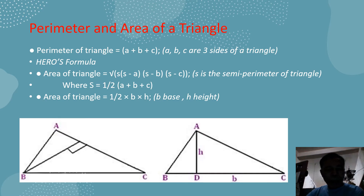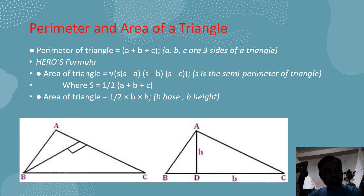This formula is known as Hero's formula. For a triangle given the altitude or perpendicular height and the length of the base, the area is equal to one-half B times height.